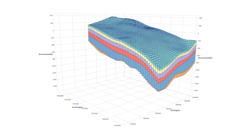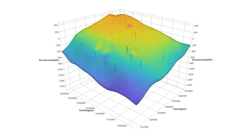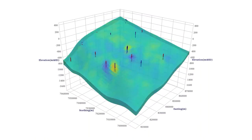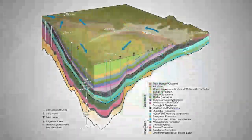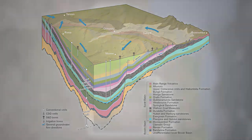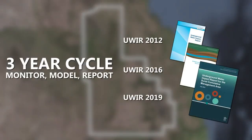Impacts on aquifers are predicted using a tool called a groundwater flow model. Models are built from available information and studies about groundwater flows and connectivity. The Office of Groundwater Impact Assessment has developed a regional scale groundwater flow model to predict impacts from current and planned CSG development in the Surat Cumulative Management Area. Impact predictions are revised every three years and reported in the Underground Water Impact Report.